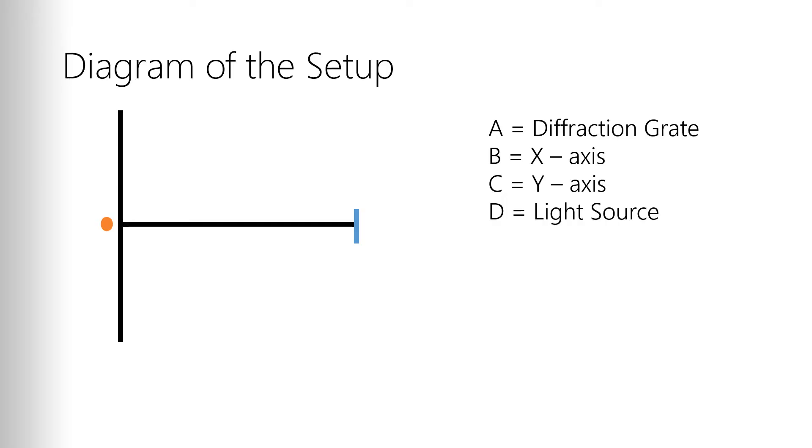So this is a diagram of our setup. You see the picture in the lab page but I want to diagram what each of the positions mean. So you have the two rulers which are represented by the black bars at perpendicular angles to each other.